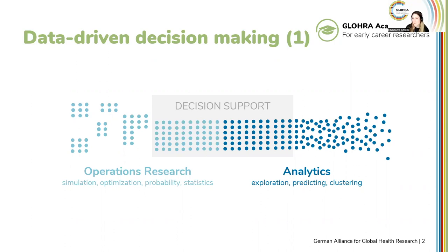There are two research streams I'm considering: on the left-hand side is operations research and the other one is analytics. Both of them have the same goal — to help you with making the best decisions — but they approach that from different perspectives. With operations research, it has a really mathematical background and we're always trying to look at the problem and look at different parts of a problem, then try to combine them together to have some information about what's the best decision.